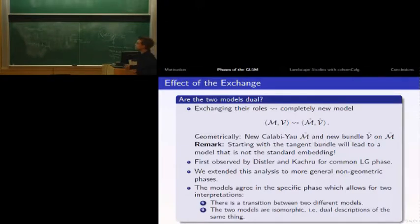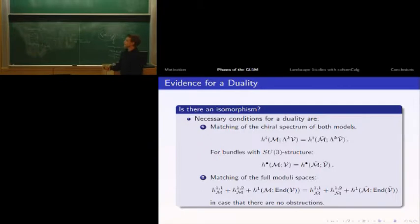How should we decide which one it is? We can put necessary conditions on having a duality. We have to check the chiral spectrum and dimension of the moduli space. We want the chiral spectrum to match in both models by calculating cohomology groups and comparing them. We also compare the dimension of the moduli space - the sum of the two Hodge numbers and deformations of the vector bundle, if there are no obstructions.